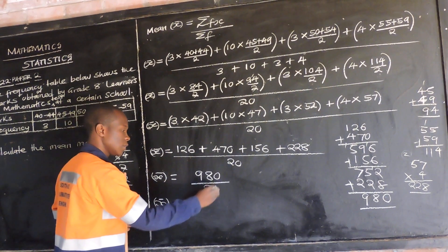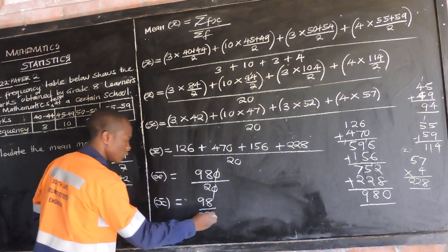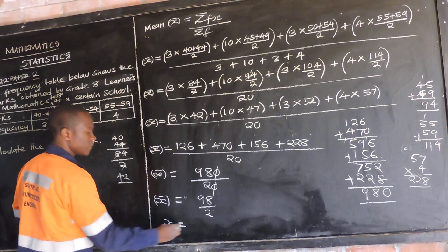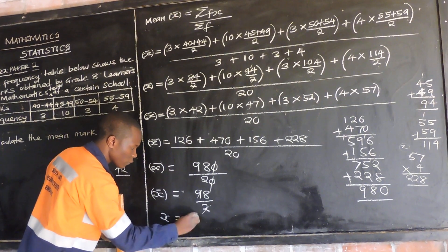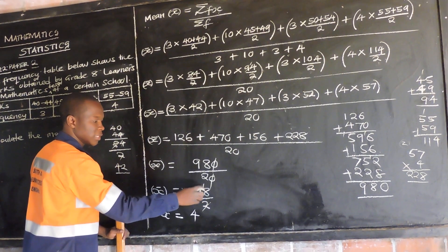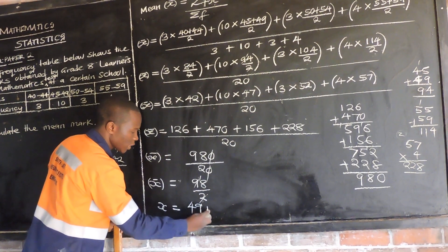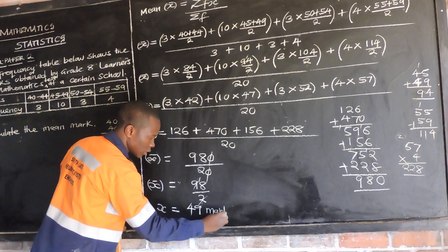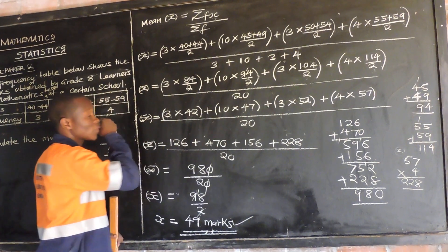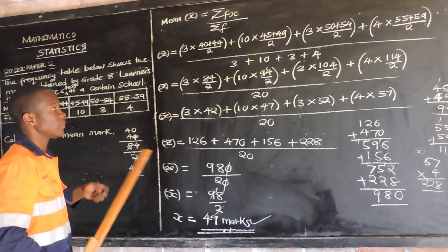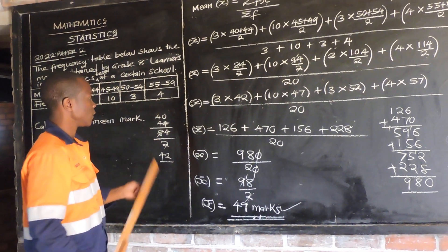Dividing 980 by 20: 2 into 98 — 2 into 9 is 4 carry 1, this becomes 18, 2 into 18 is 9, so we get 49. So 49 is our mean. So I think that was it — these things you are supposed to be practicing in your mind for it to be perfect. They are very, very simple.